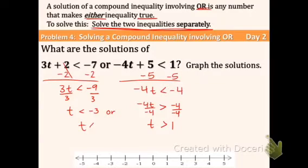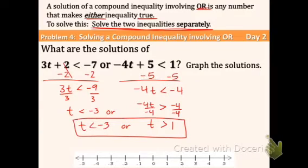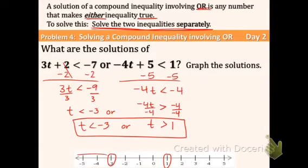So our answer is t is less than negative 3 OR t is greater than 1. Now we graph it on the number line: open circle on negative 3, and open circle on 1 as well. The less than symbol points towards the left, so we shade left from negative 3. The greater than symbol points towards the right, so we shade right from 1.